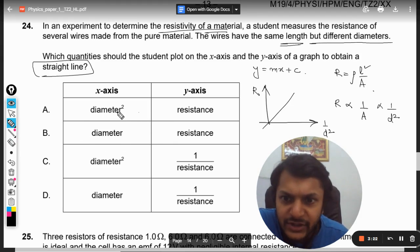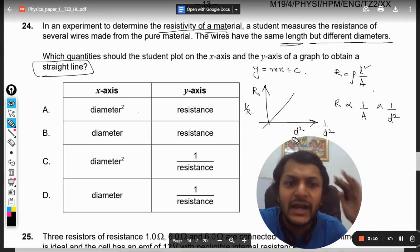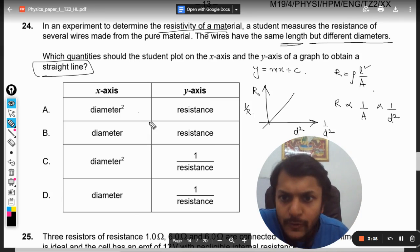On the x-axis we have diameter squared, so we would have 1/R here. In the other way, you could have 1/R on the y-axis and d² on the x-axis. Even then you would get a straight line. So this is not right, this is not right.